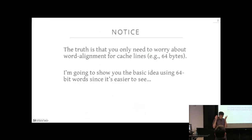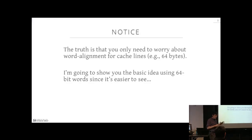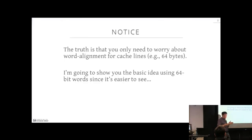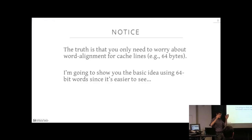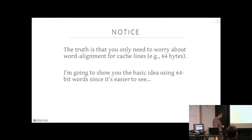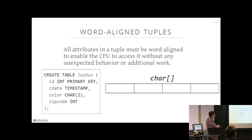Word alignment means lining up your data so the CPU can read it efficiently. The example I'll show uses word alignment across 64-bit words — though in a real CPU, you actually need to worry about alignment across cache lines, which are 64 bytes. Keep that in mind: the real-world alignment issue involves a much larger boundary than what I'm about to illustrate.